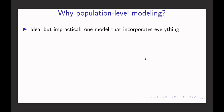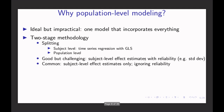Why do we need to perform population-level modeling? Ideally, we want to build a model that incorporates all the levels instead of splitting them apart. But usually we don't do that for two reasons: model complexity and computational feasibility — the current computational power is not there yet. That's why we spread it into two stages: first the subject-level time series regression model solved with generalized least squares, then the population-level model.